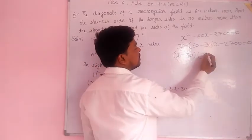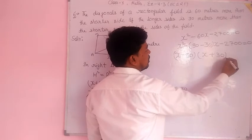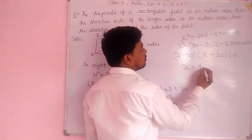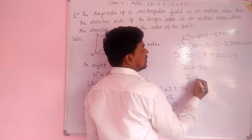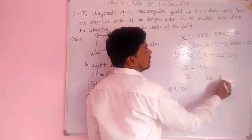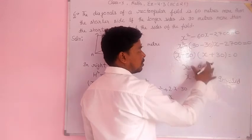X squared minus 90X minus 30X minus 2700 equal to 0. Solving gives X equals 90 or X equals minus 30, which is an invalid value.